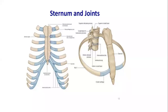The joints of the thoracic wall are very important. With the help of these joints, we are able to breathe normally and properly. It is at these joints that the movement of the ribs is enabled, and the ribs and costal cartilages can be moved at these joints. Starting with the routine structure of any joint studied in the body, similar is the case with the joints of the thoracic wall.